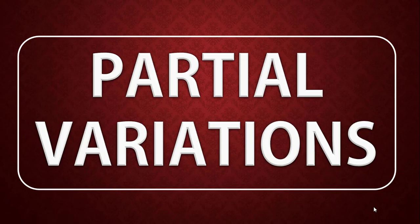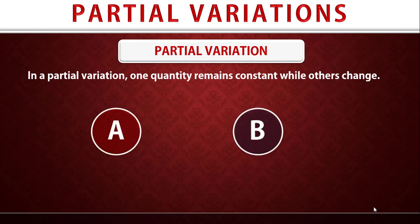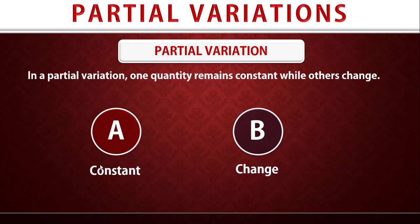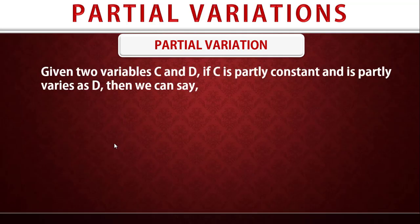Welcome to partial variations. In this lesson I'll be walking you through calculations related to partial variations. In a partial variation, one quantity remains constant while others change. For instance, we have quantity A and quantity B — if quantity A remains constant, quantity B can change, meaning B can increase or decrease while A remains constant. That means quantity A is an independent variable; it does not depend on B.